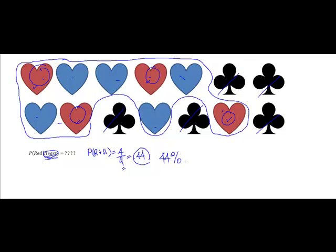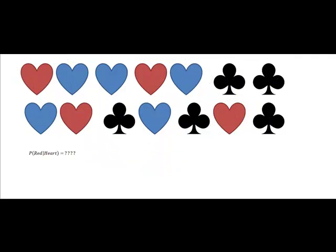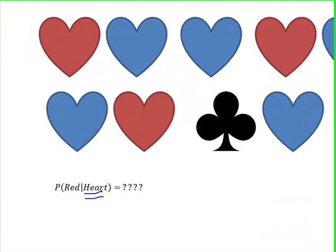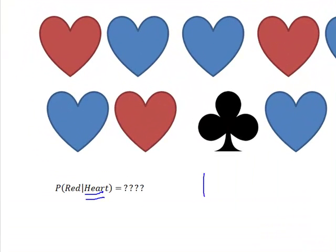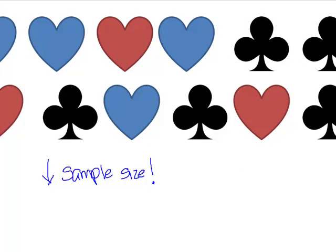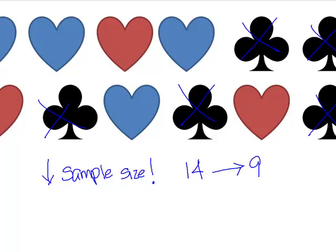And remember, a given, because something has already happened, a given always reduces the ones from which I have to choose. So a given will always reduce your sample size. And what you notice is that my sample size went from a fourteen down to a nine because I didn't want or didn't care about any of those clubs.